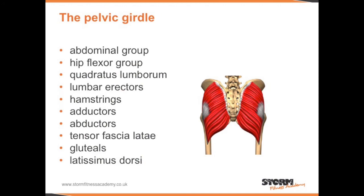There are also several muscles that support the structure of the pelvic girdle: the abdominals, hip flexors, quadratus lumborum, the lumbar erector, the hamstrings, the adductors, abductors, the tensor fasciae latae, gluteals, and the latissimus dorsi.